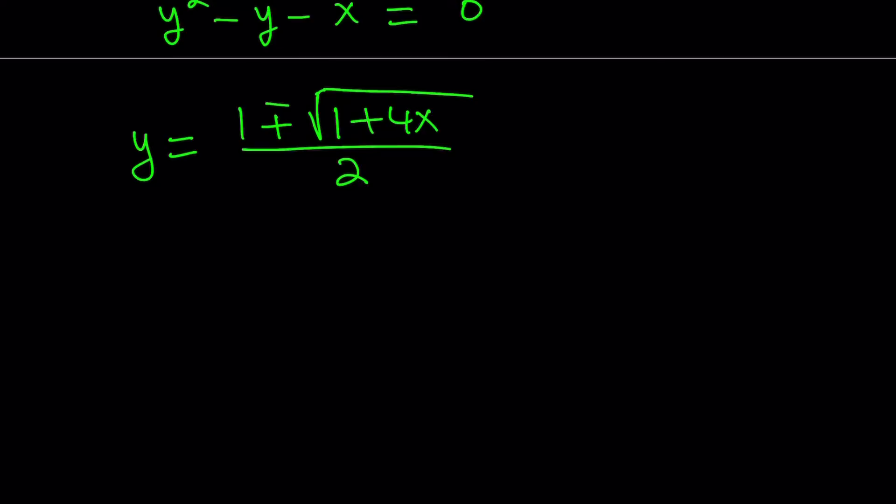So y is equal to this, and since we want y to be positive, square root of 1 plus 4x for positive values of x, this is going to be greater than 1. And if this is greater than 1, then 1 minus that is going to be negative, so we don't want that. So therefore, we're going to use the plus sign here only.